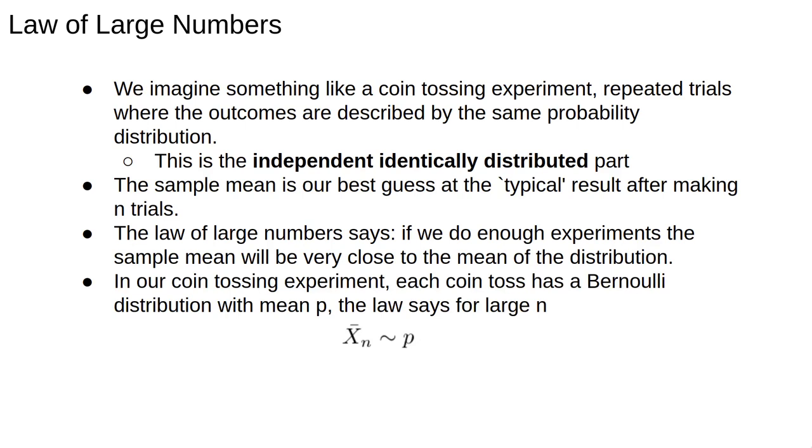In our coin tossing experiment each coin toss has a Bernoulli distribution with mean p. We calculated the expectation before and found that it was p. The law of large numbers says that for large n, x̄n that is the average number of heads in n coin tosses approaches p more and more closely as we increase n.